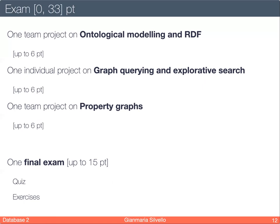With these three projects and homeworks, you will have up to 18 points. Then there is the final exam. This is mandatory and up to 15 points. The final exam will be composed by a quiz, a multiple choice test. If you pass the multiple choice test, you will have some exercises to do.